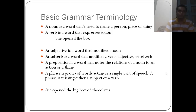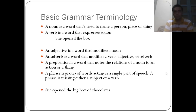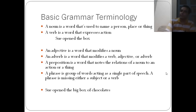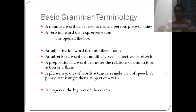To summarize: an adjective modifies a noun, an adverb modifies a verb, a preposition talks about the relation of a noun to an action, and a phrase is a group of words acting as a single part of speech — but missing a subject or a verb.